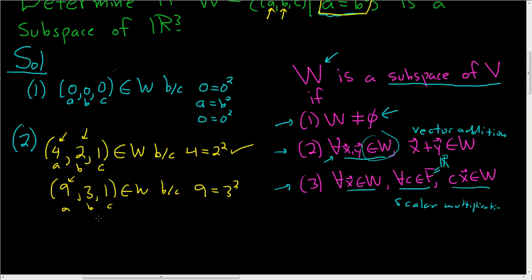Now the question is, is the sum in W? We have (4,2,1) plus (9,3,1). We add these vectors in the usual way by adding corresponding components. So 4 plus 9 is 13, 2 plus 3 is 5, and 1 plus 1 is 2. The question is, is (13,5,2) in W?